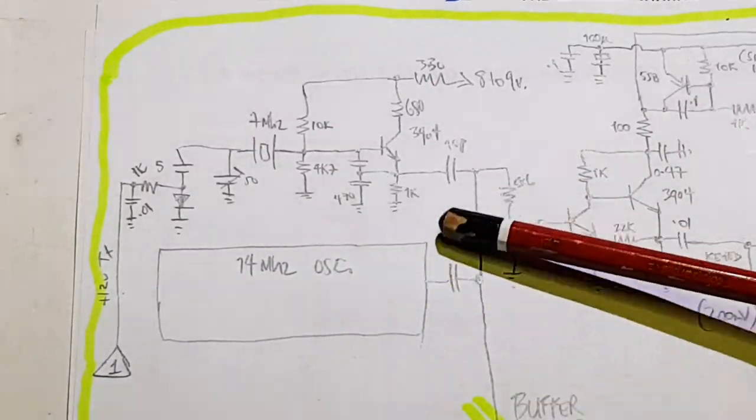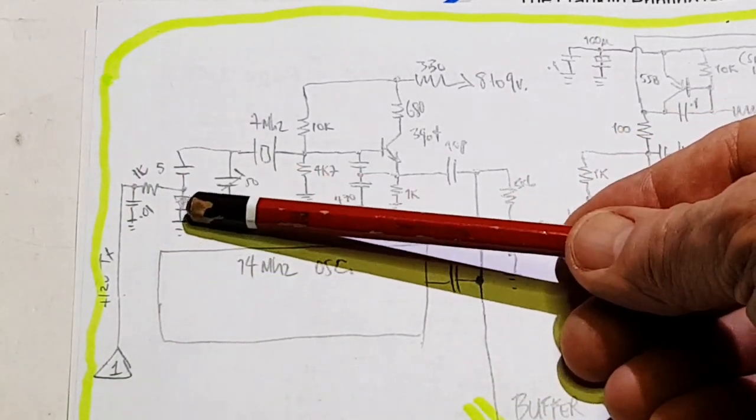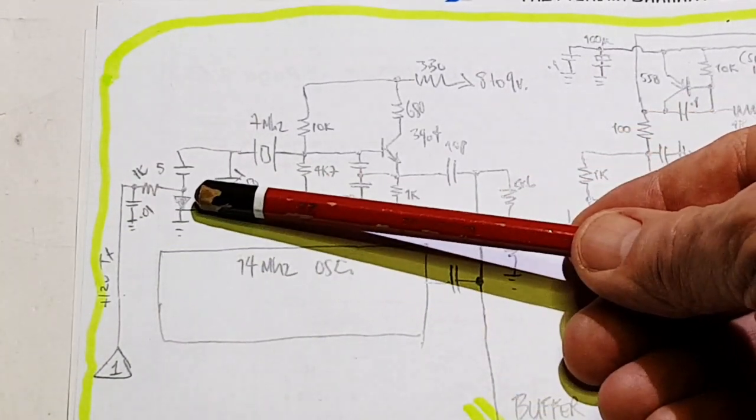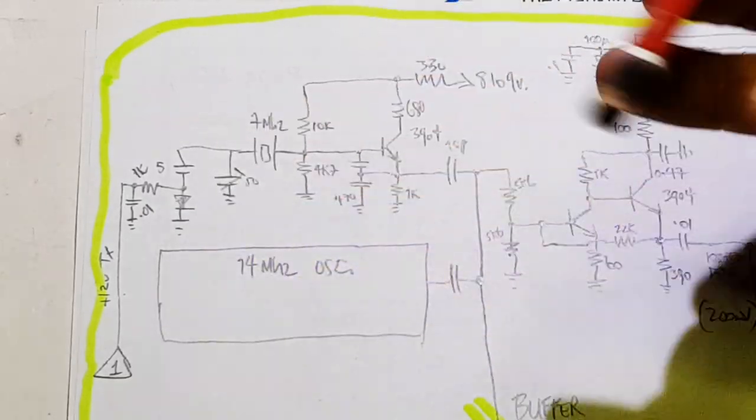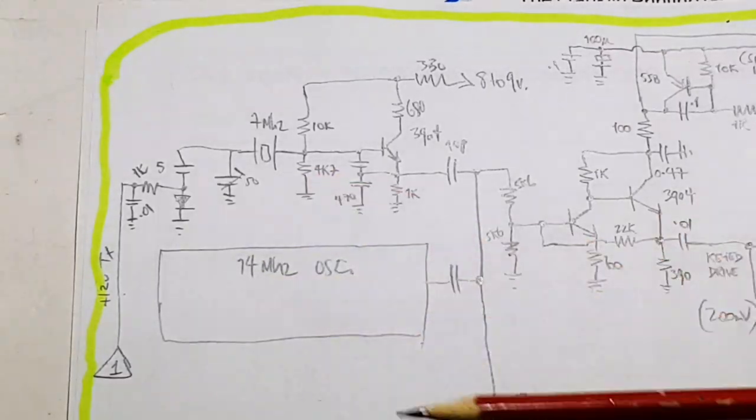If it's going to be a CW transceiver, then you'll need a DC offset and a small amount of capacitance in parallel with the crystal to pull it lower by about 700 hertz on transmit.